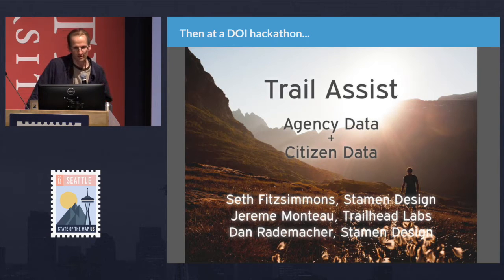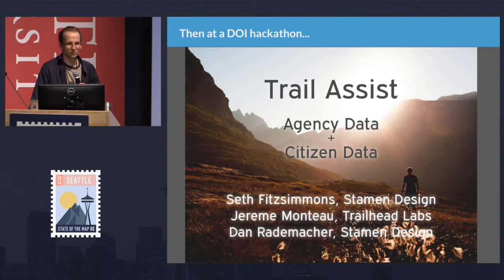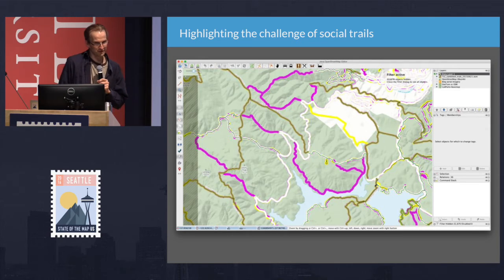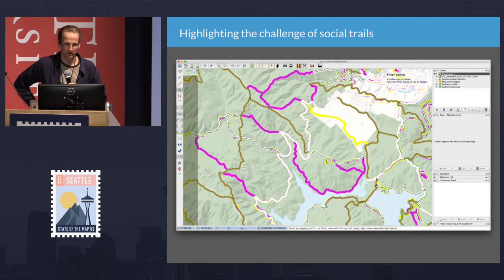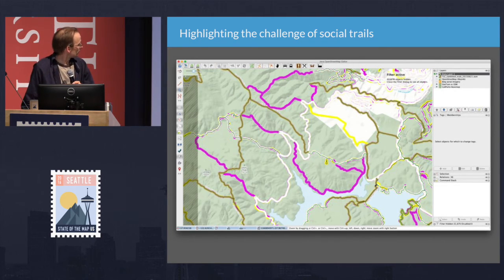Seth, Jeremy Monto from Trailhead Labs, and I ended up at a DOI Department of Interior Hackathon and started working on this problem: how do we compare official parks trails data to OSM data? In a day, mostly thanks to Seth and Jeremy, we came up with a visual diff where the pink lines are OSM trails not in official data, the yellow lines are official trails not in OSM, and the white lines are in both. You can see little areas where they differ, but the big pink lines were the main concern.